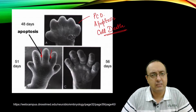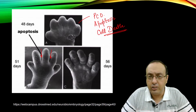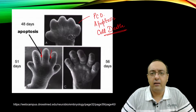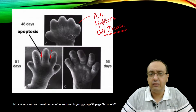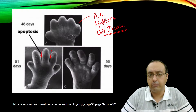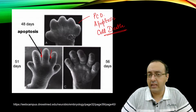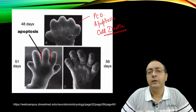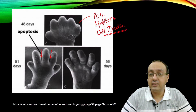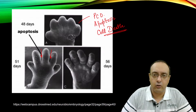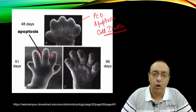Apoptosis also takes place routinely in cell renewal in cells that are actively producing new cells — for example, skin cells and small intestinal epithelial cells. These undergo apoptosis a lot.